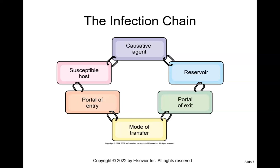The third link is the portal of exit — how does this pathogen leave the host? It can leave through the GI tract via feces, which we know is contaminated with bacteria. It can also exit through the respiratory tract in coughing and sneezing — examples include measles, mumps, and tuberculosis. Those droplets linger in the air and can contaminate surfaces. Open wounds and mucous membranes can also be portals of exit.